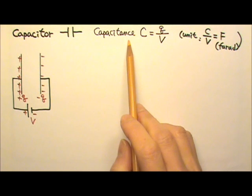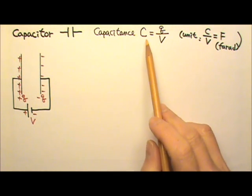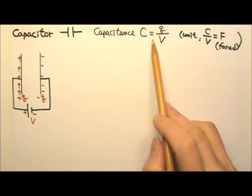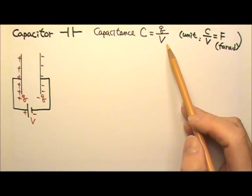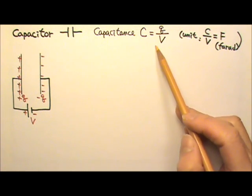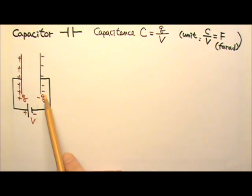A capacitor has capacitance. We use the capital C for capacitance. The definition for capacitance is C equals Q over V, the charge a capacitor carries divided by the voltage difference between the two plates.